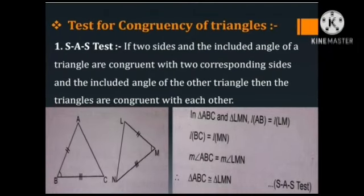Tests for congruence of triangles. Number 1: SAS test. If two sides and the included angle of a triangle are congruent with two corresponding sides and the included angle of the other triangle, then the triangles are congruent with each other. Look at the figure. In triangle ABC and triangle LMN: length of AB equals length of LM, length of BC equals length of MN, and angle ABC equals angle LMN. Therefore, triangle ABC is congruent to triangle LMN. It is the SAS test.